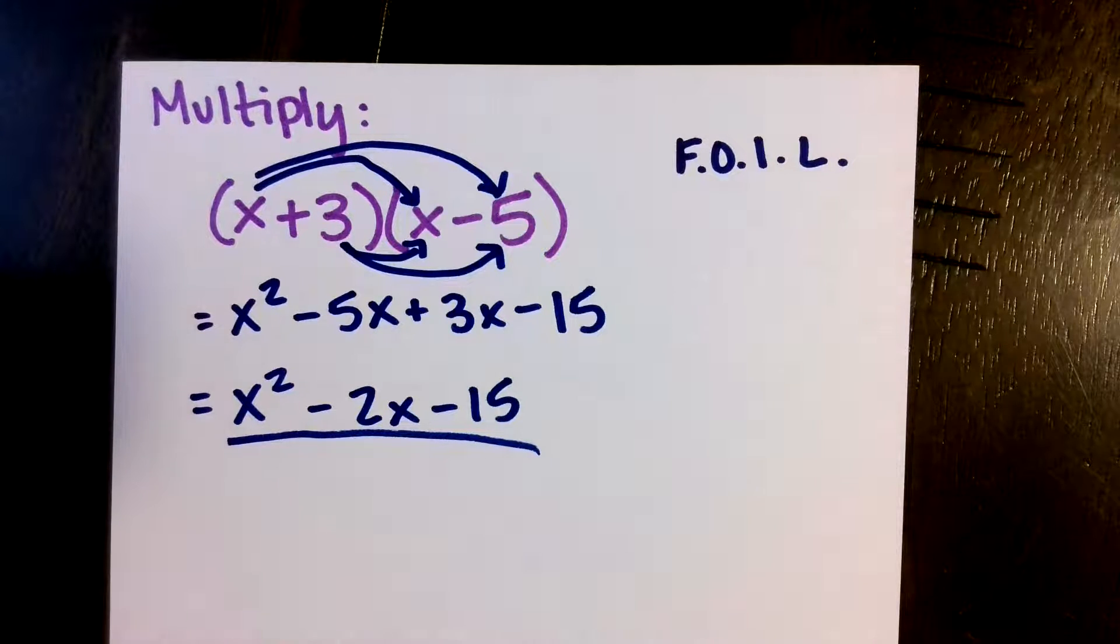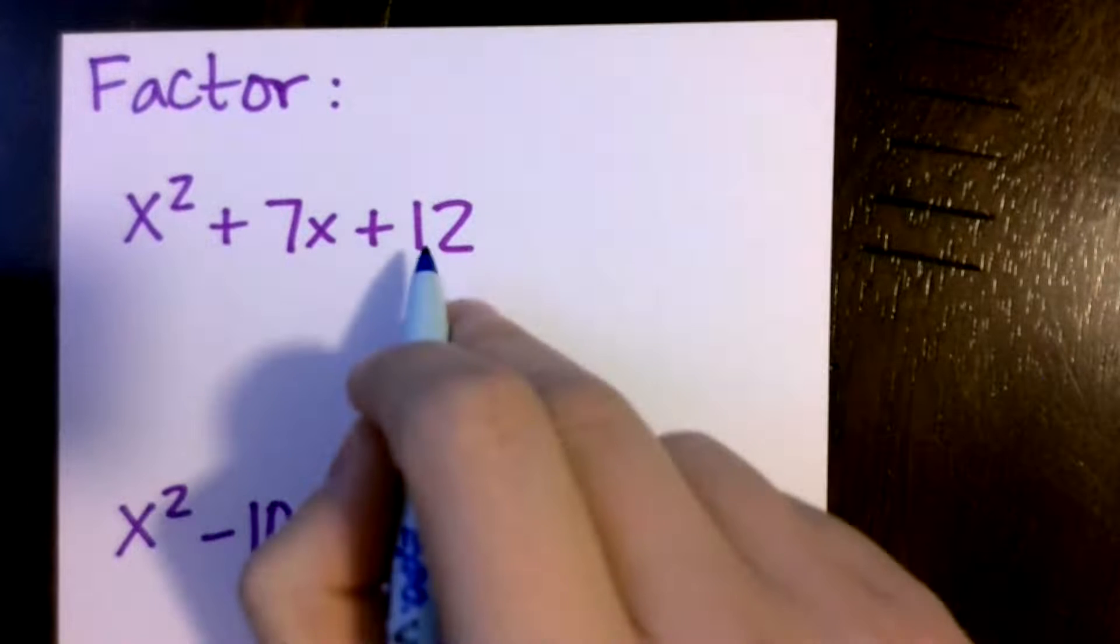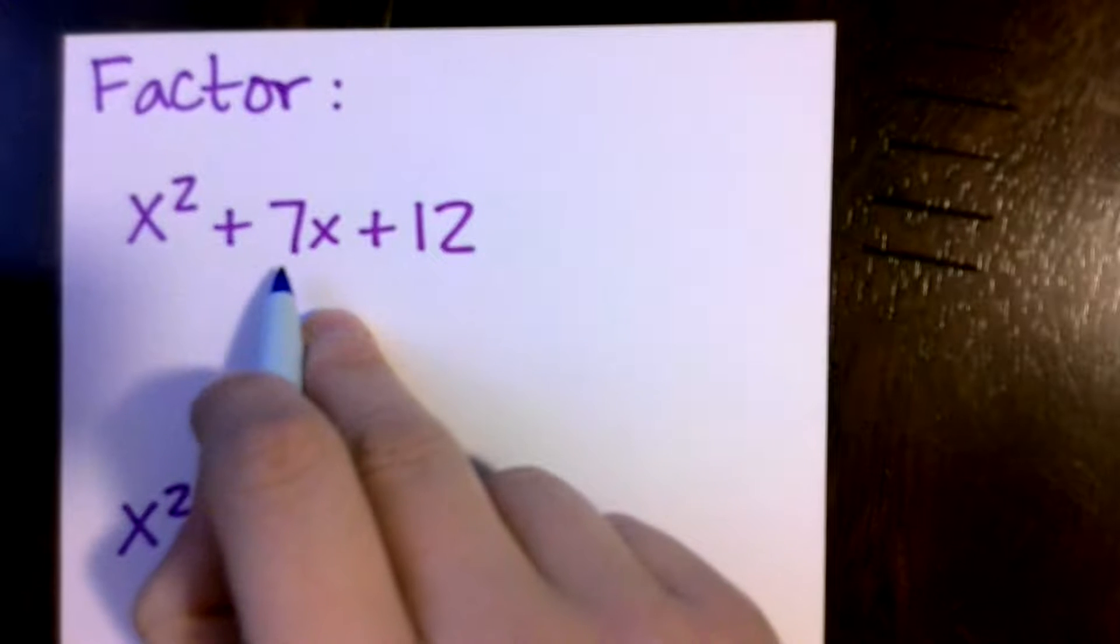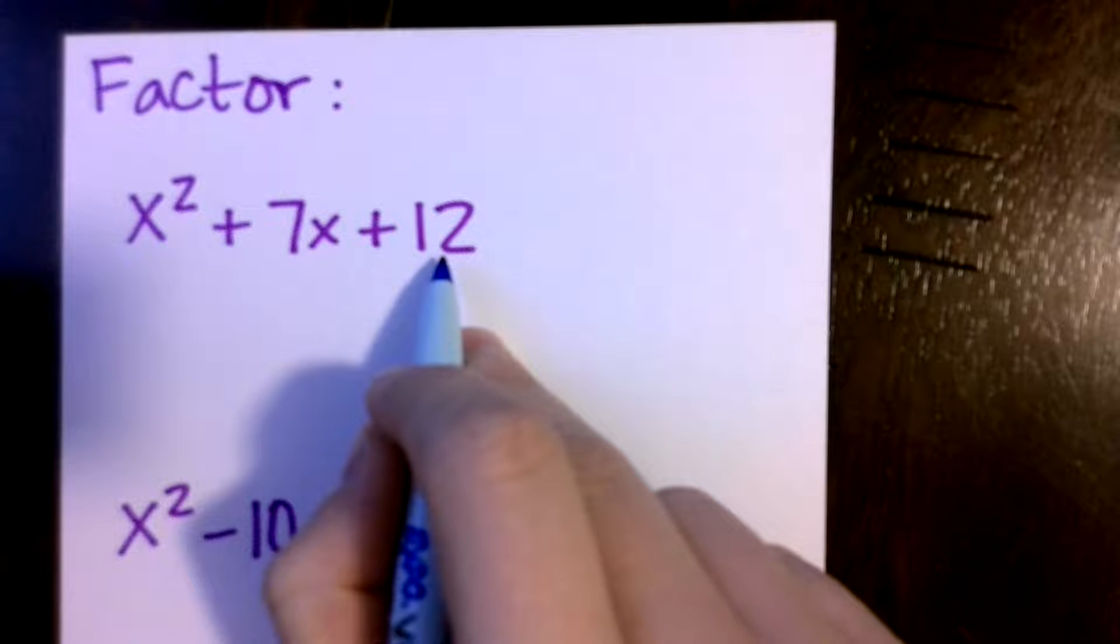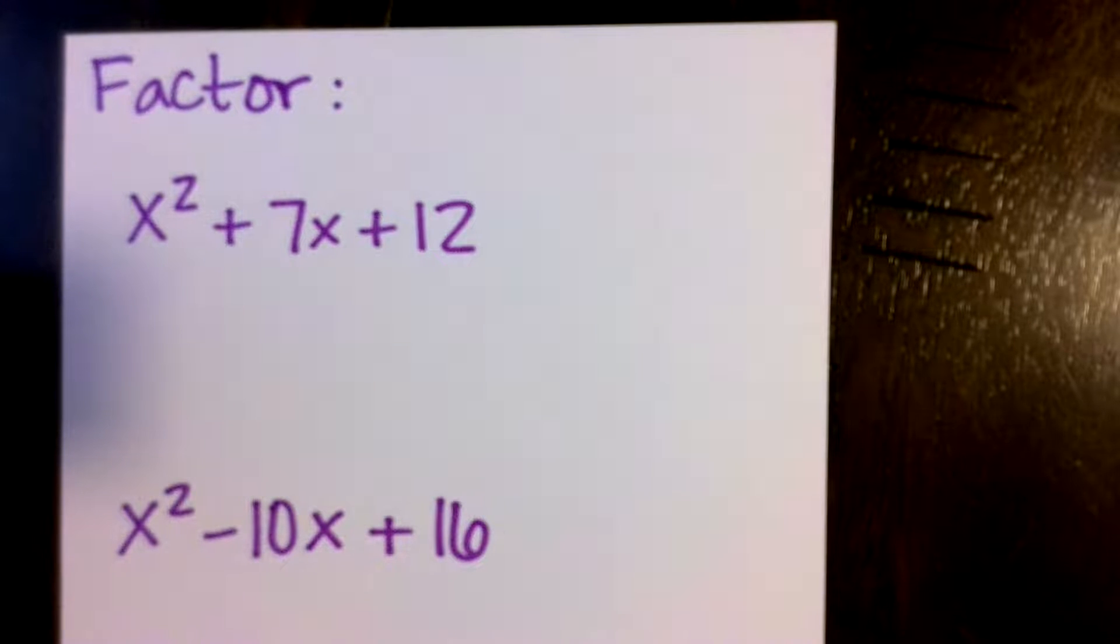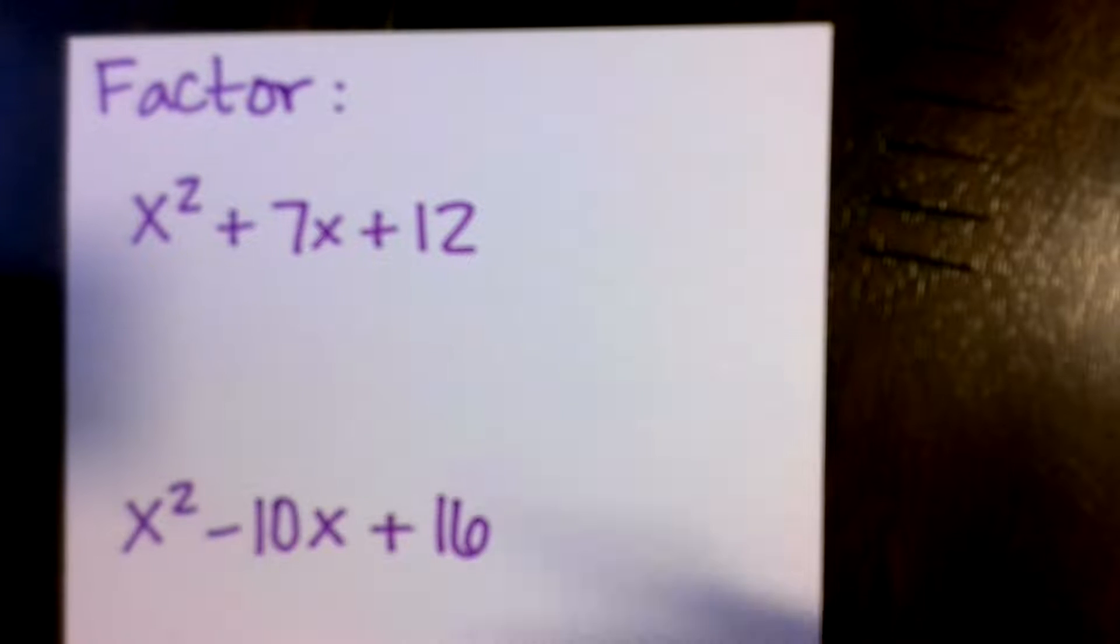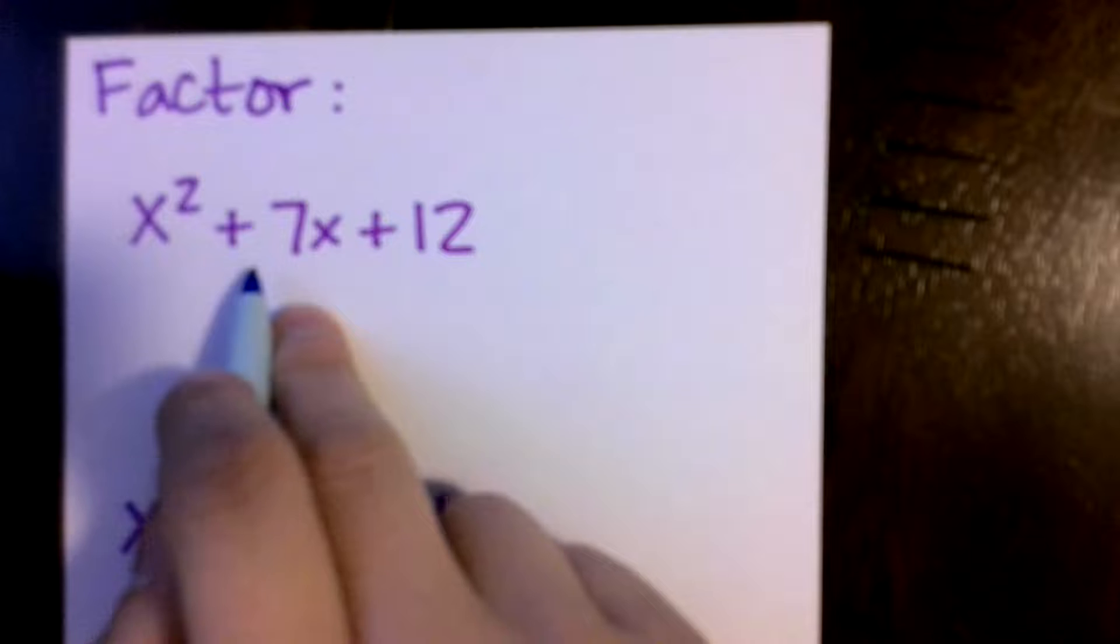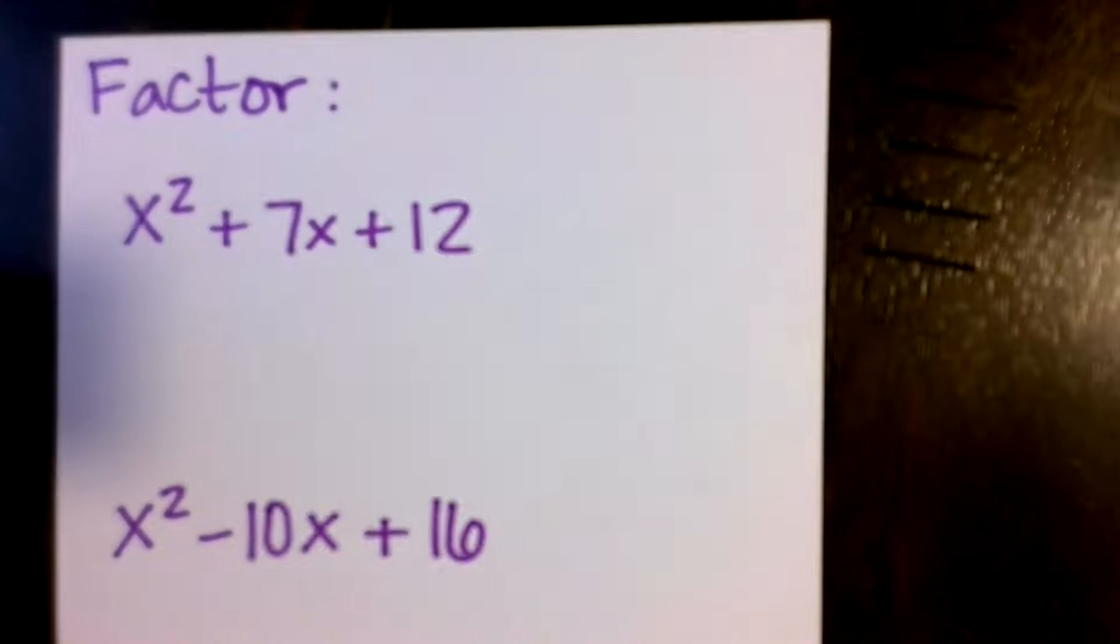Looking at factoring, we're going to be looking for two numbers that multiply to be 12 and add to be a positive 7. The signs definitely give things away. If I'm multiplying to be a positive number, that means the numbers either have to both be positive or both be negative. And then it's adding to be a positive number, so that means I'm looking for two positive numbers that multiply to be 12 and add to be 7.